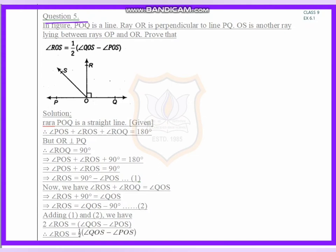In the figure, POQ is a line. Ray OR is perpendicular to line PQ. This is OR which is perpendicular to PQ.